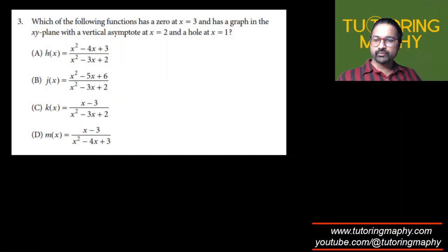Alright, okay. Now let's talk about this one. Which of the following functions has a zero at x = 3 and has a graph in the xy-plane with a vertical asymptote at x = 2 and a hole at x = 1?